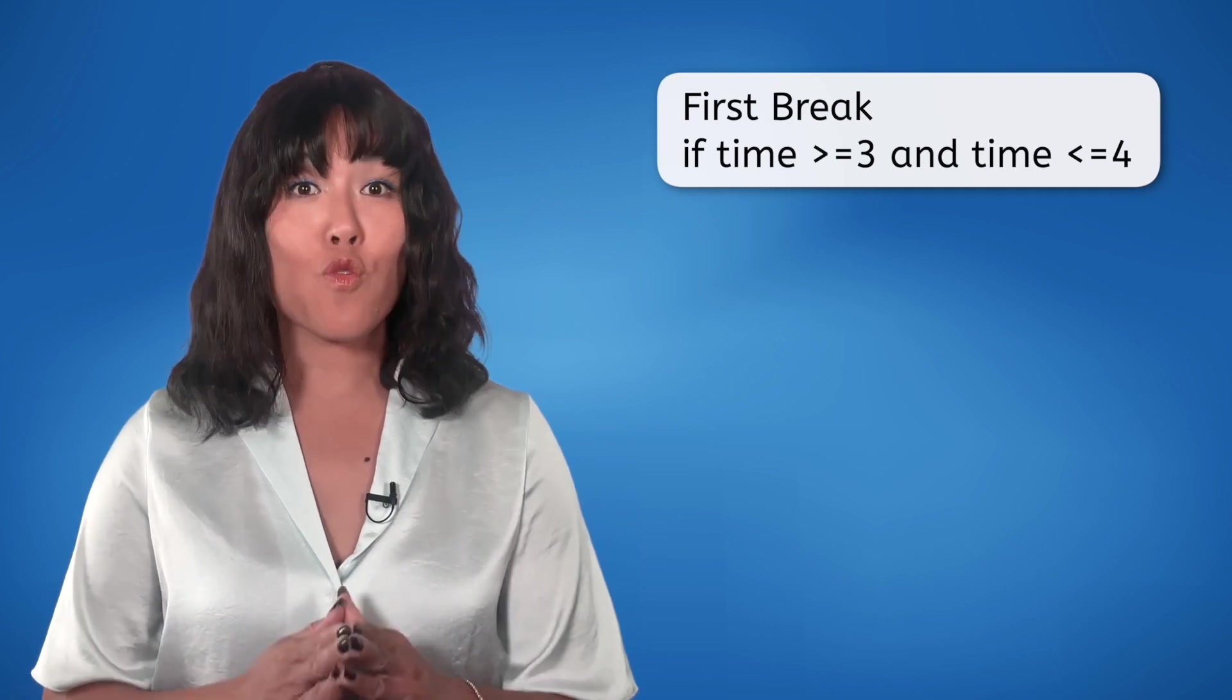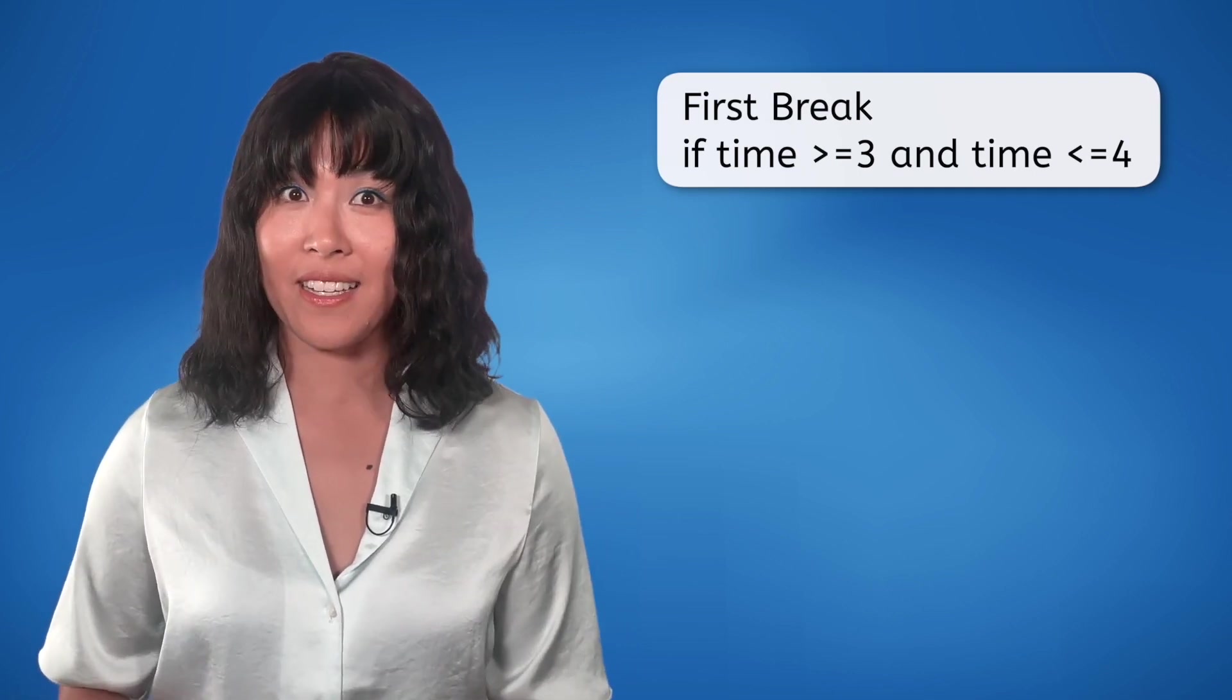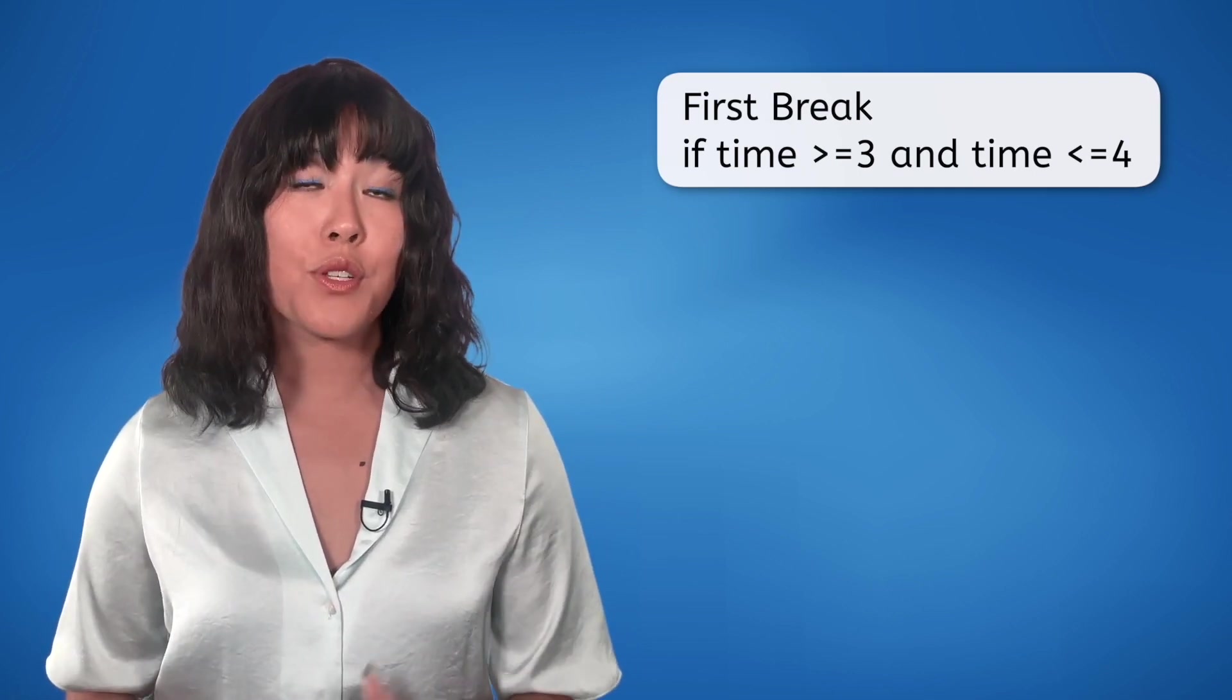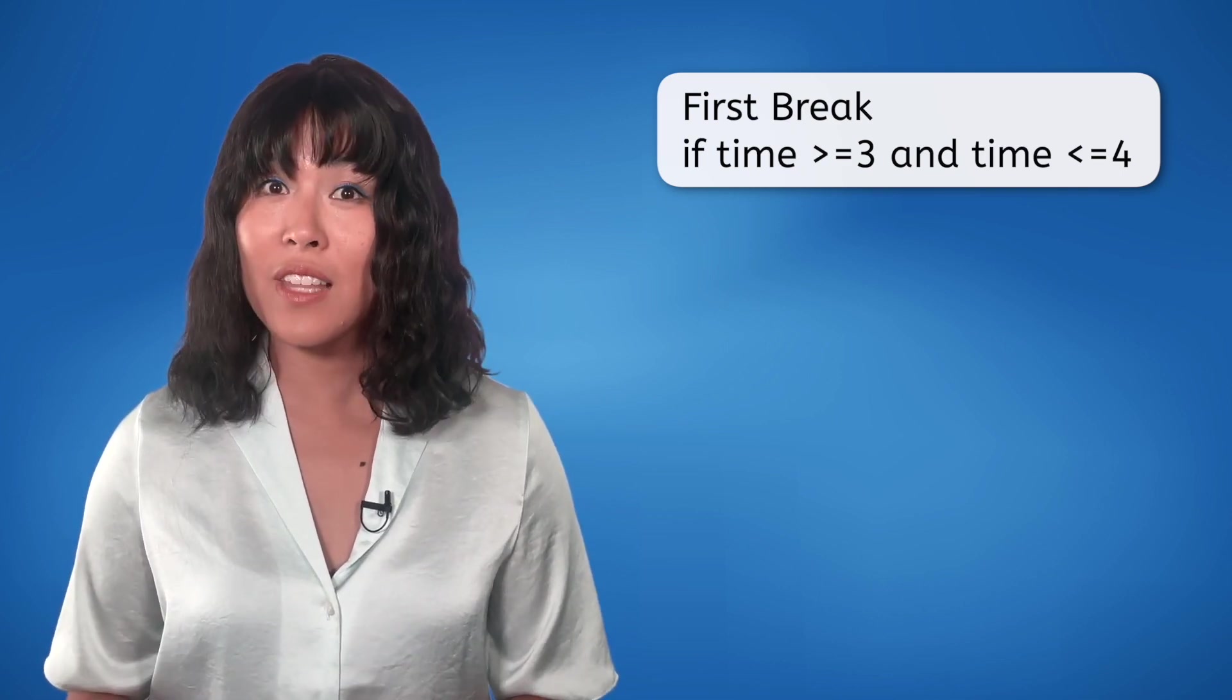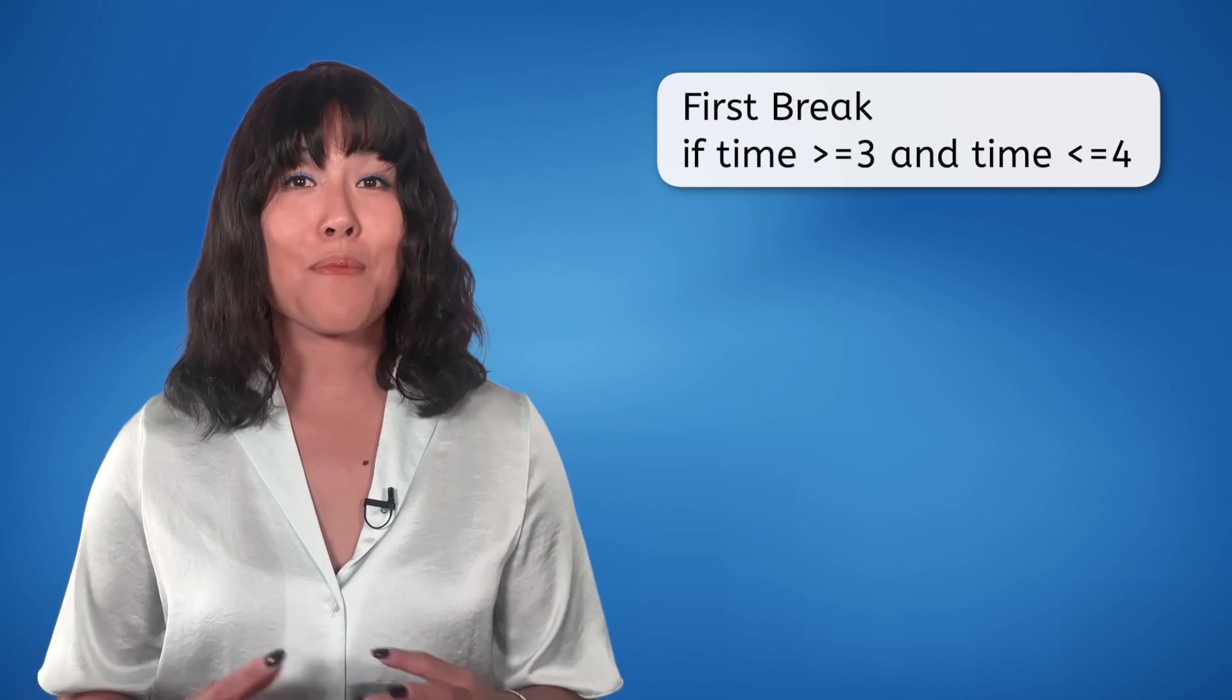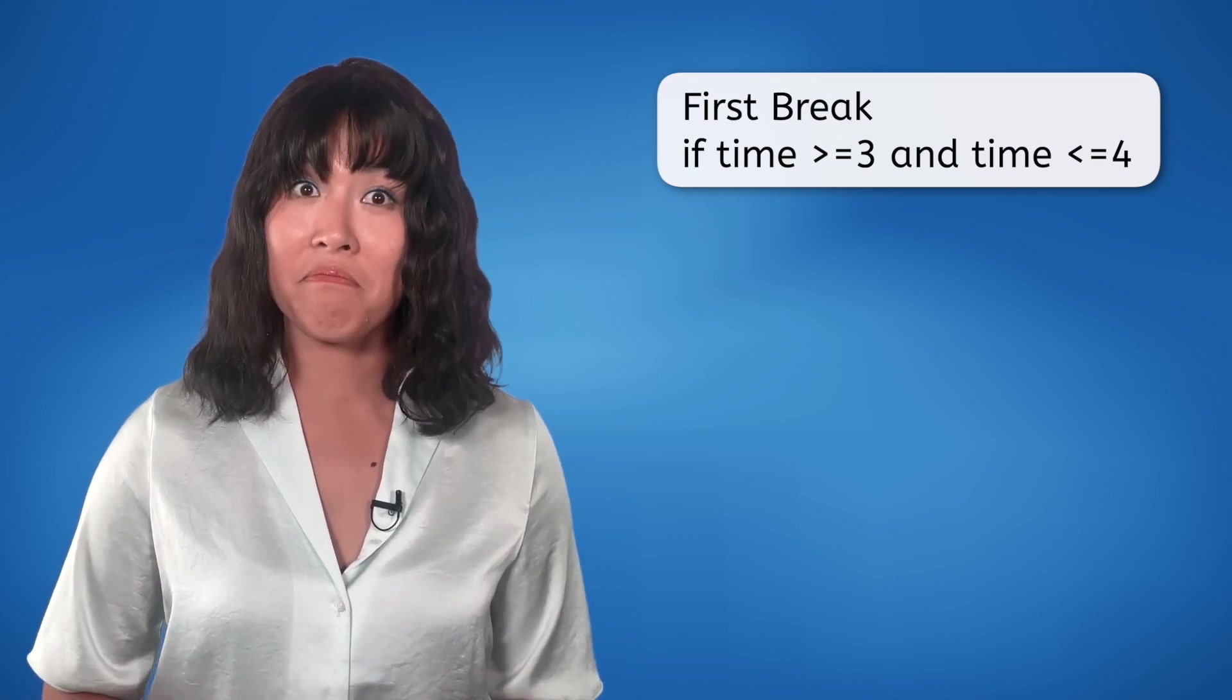We will start by defining the range of my first break. My break is from 3 o'clock to 4 o'clock, so we can write IF time is greater than or equal to 3 and time is less than or equal to 4, I'm on break!